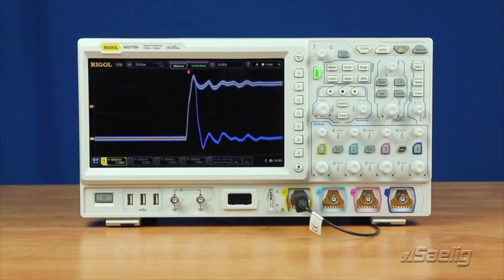Pass-fail testing is a tried and true method of signal analysis. The 7000 series makes pass-fail analysis faster and easier thanks to the processing capabilities of the UltraVision 2 architecture.